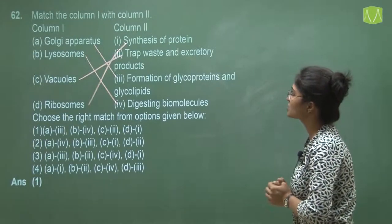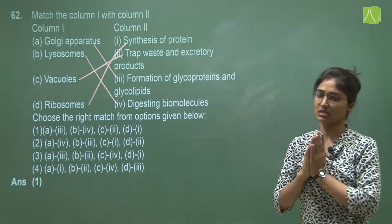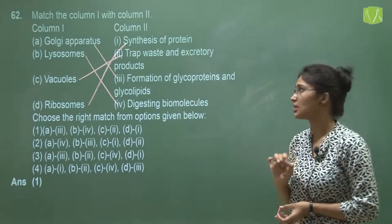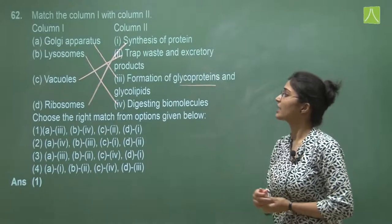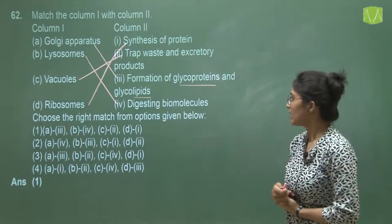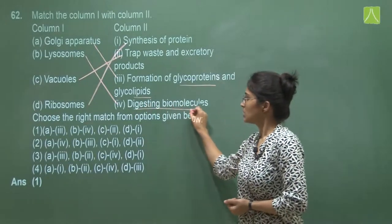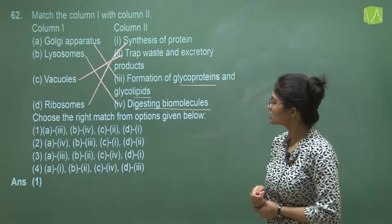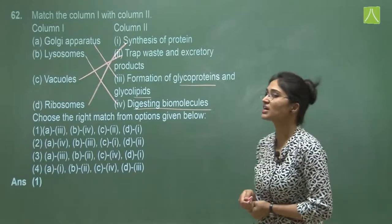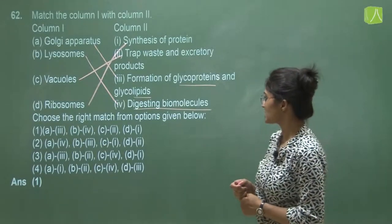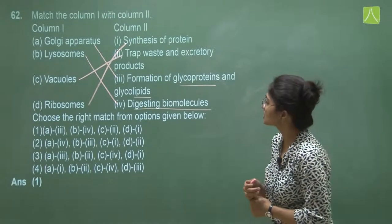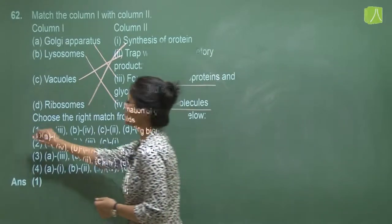Question 62 asks to match cell organelles in column 1 with their functions in column 2. Golgi apparatus is involved in glycosylation and glycosidation, forming glycoproteins and glycolipids — A matches with 3. Lysosomes are the suicidal bags of the cell, used for digestion of biomolecules via hydrolytic enzymes — B matches with 4. Vacuoles trap waste and excretory products — C matches with 2. Ribosomes are involved in protein synthesis during translation — D matches with 1. The correct option is option one.